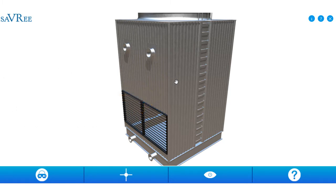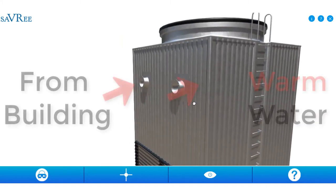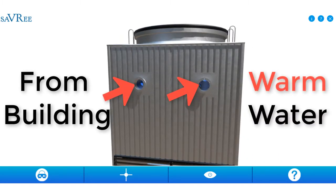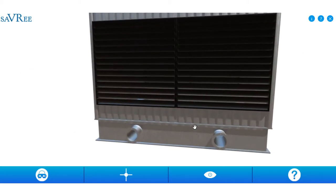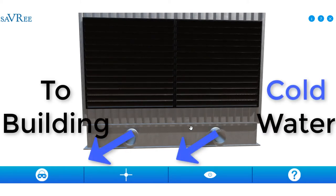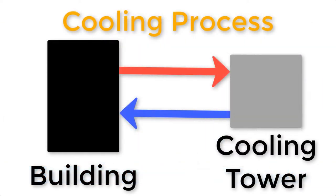The water from the building connects to these two top pipes here, and the water being supplied to the building comes from these two lower pipes here. We want to supply the building with cold water and we're going to get back warmer water, because it's going to pick up some of that heat out of the building and carry the heat away. Once we've got rid of the heat, we can send the cooler water back again, continually removing heat from the building.